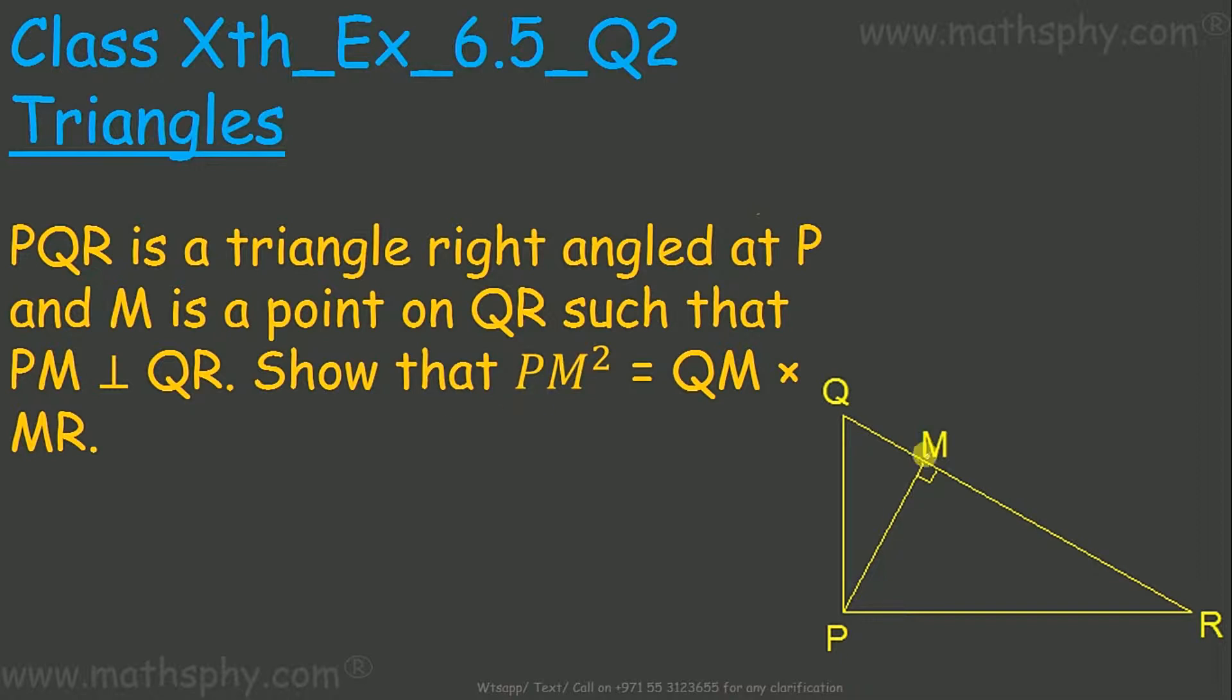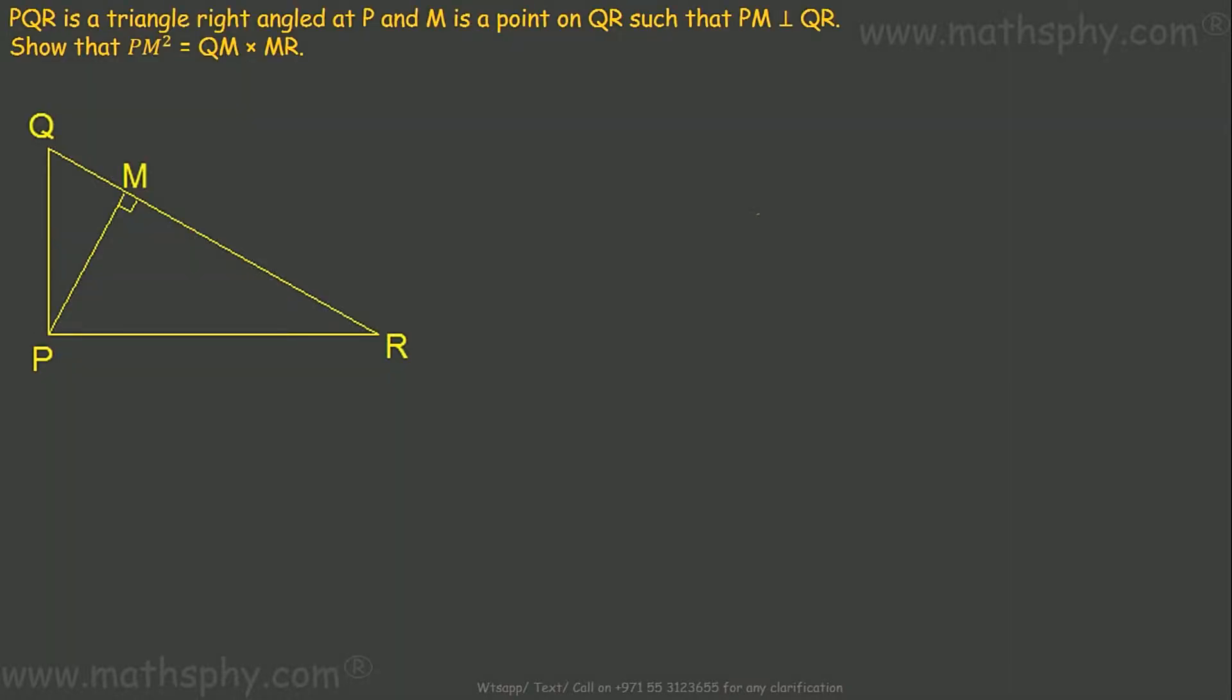QPR is right-angled at P. As per the theorem, in a right-angle triangle, a perpendicular drawn from the vertex of the right angle on the hypotenuse will give us two right triangles. And both these right triangles are similar to each other as well as similar to the big triangle or whole triangle.